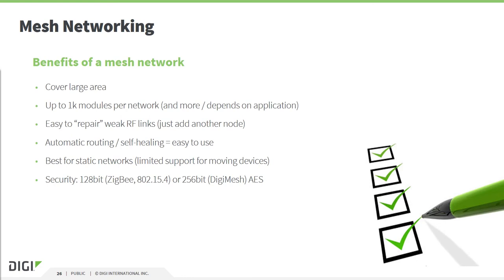To summarize what mesh networking offers: you can cover a large area, create up to 1000 nodes per network, and easily repair or let the mesh network repair itself if there are communication problems. The network maintains itself, and importantly, the nodes are not moving around — otherwise you would need to force the network to update routing tables more often. For security, Digi offers 128-bit encryption for ZigBee and 802.15.4, and 256-bit encryption for DigiMesh.